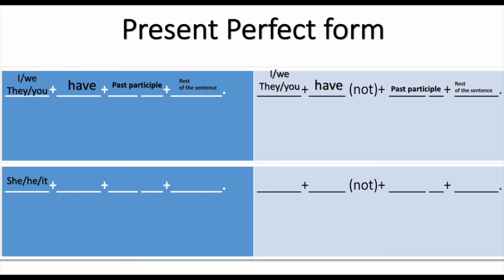For 'she', 'he', and 'it' — use 'has' (which is fixed) plus the past participle form of the verb and the rest of the sentence. Negative form: 'she / he / it' plus 'hasn't' or 'has never', then the past participle and the rest of the sentence.